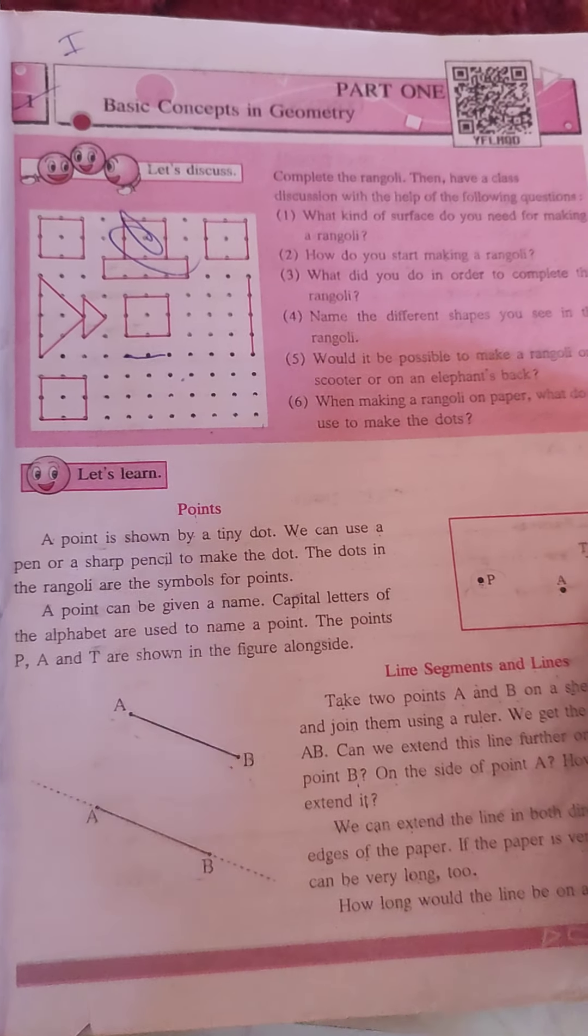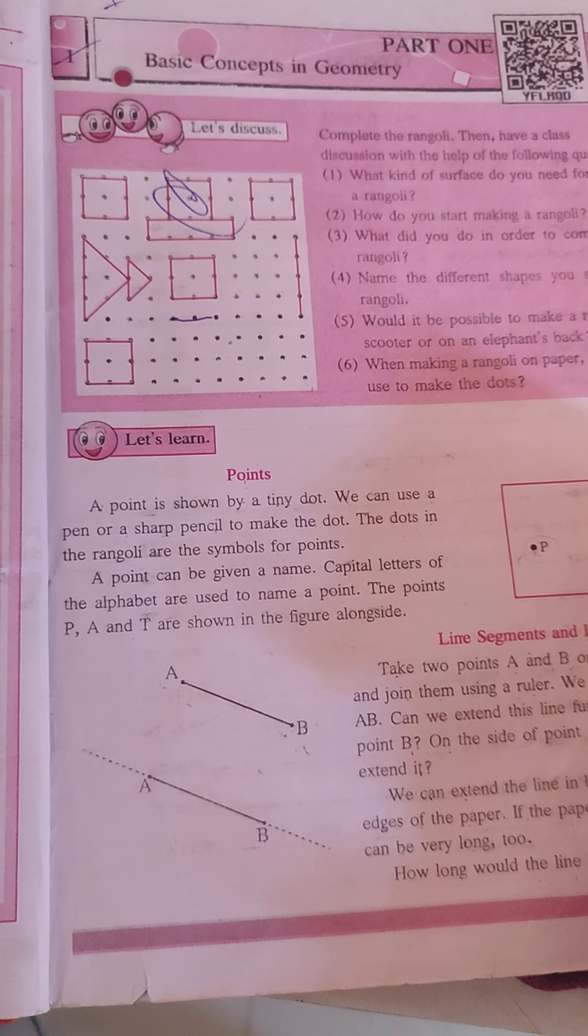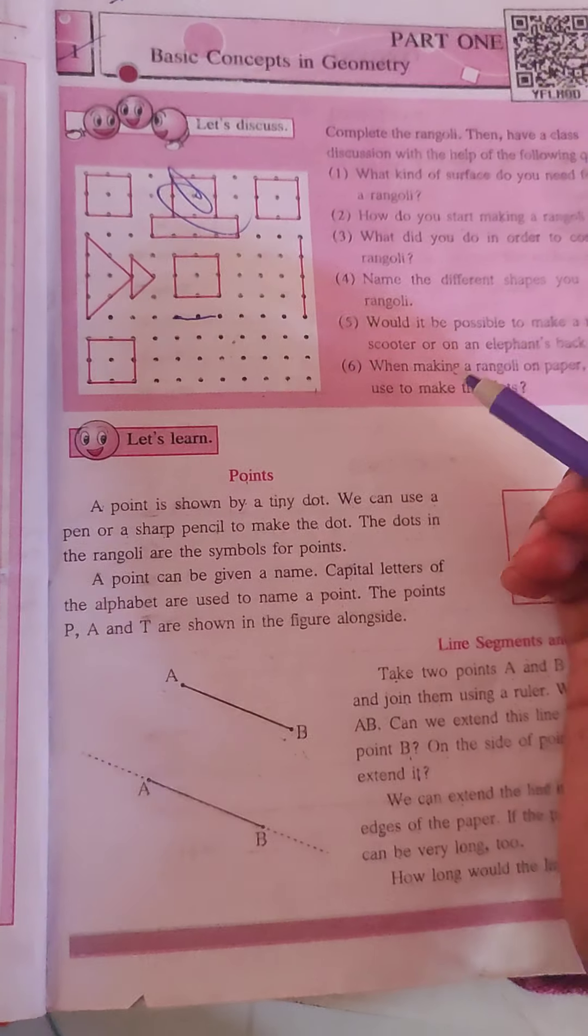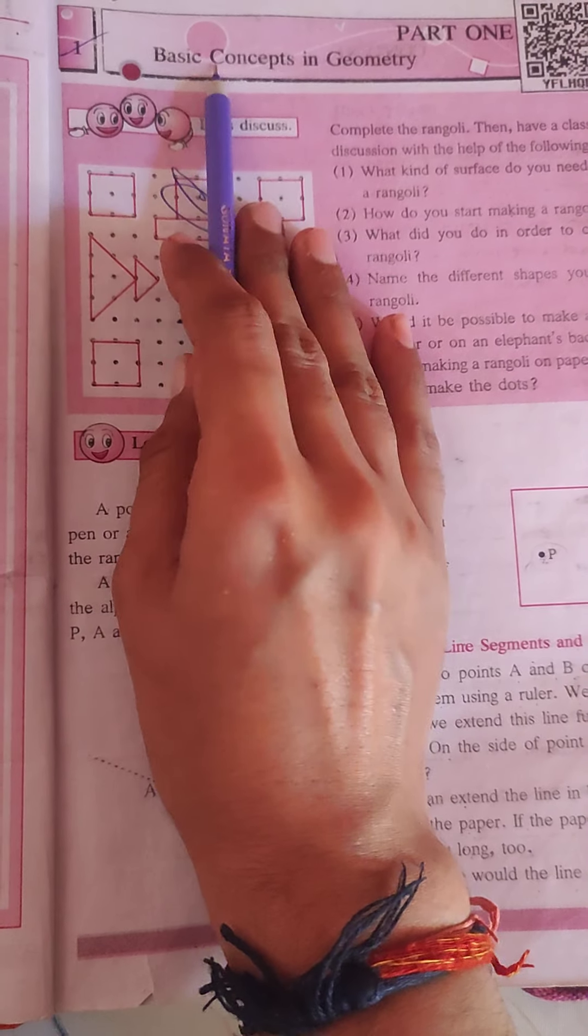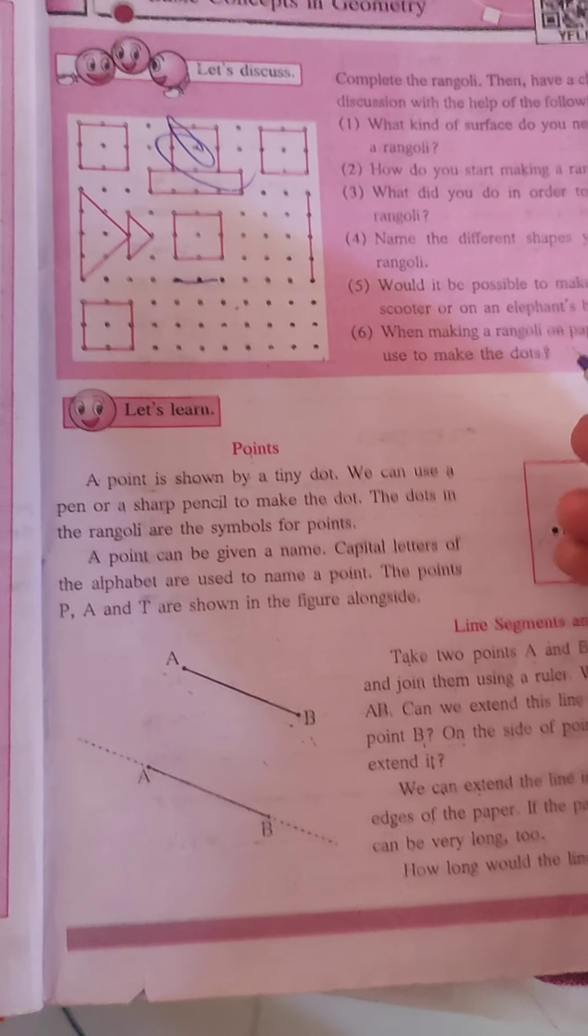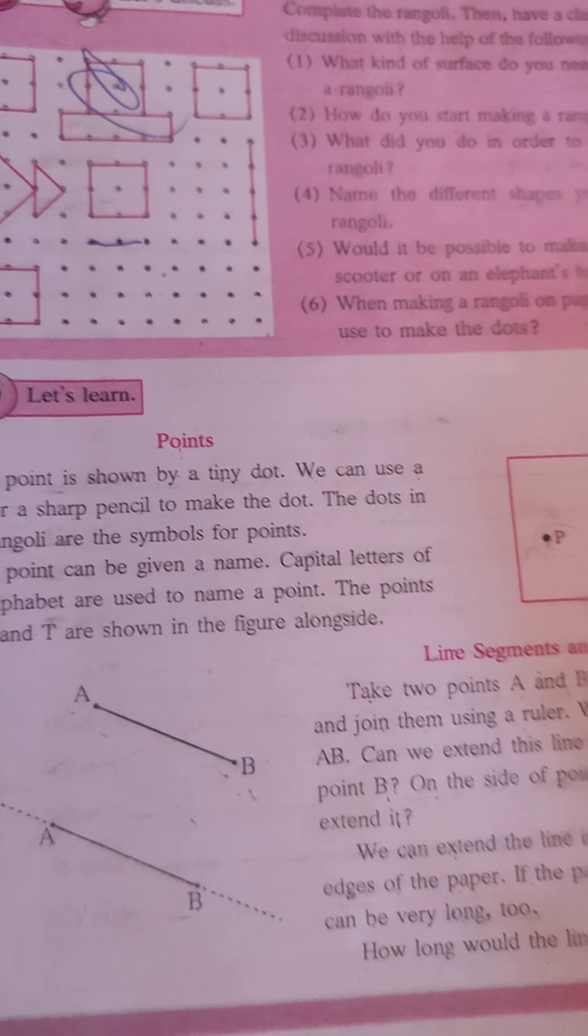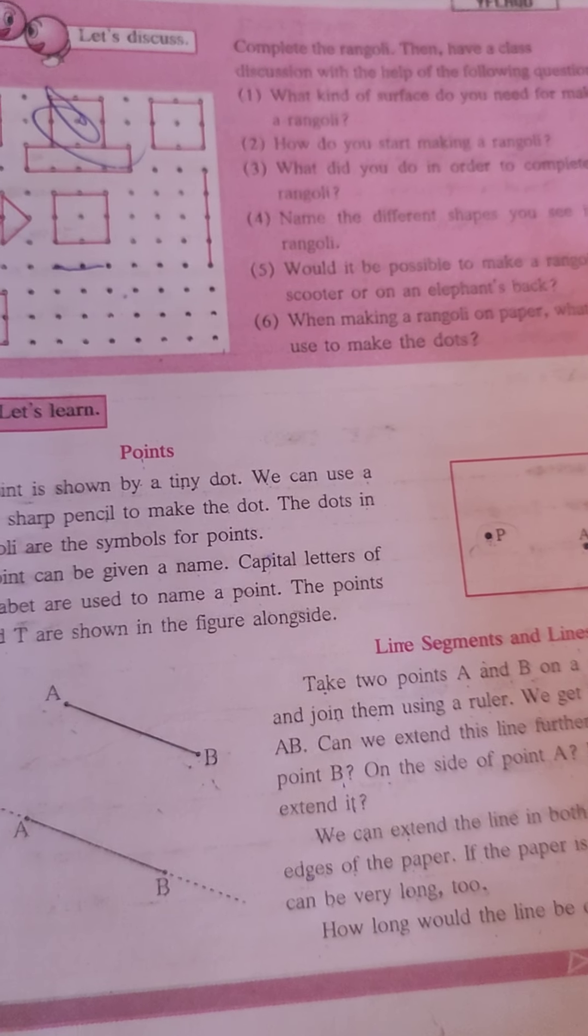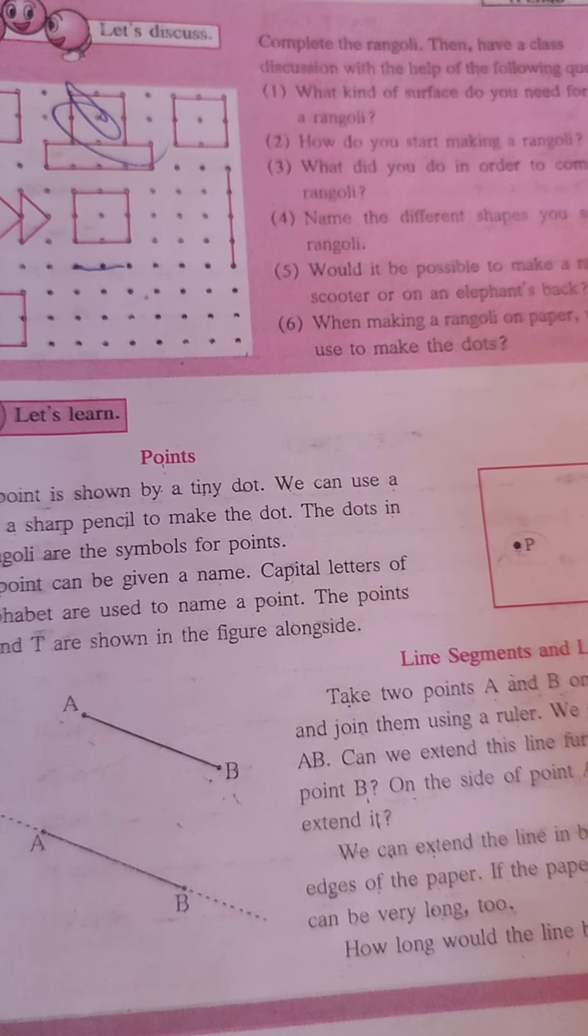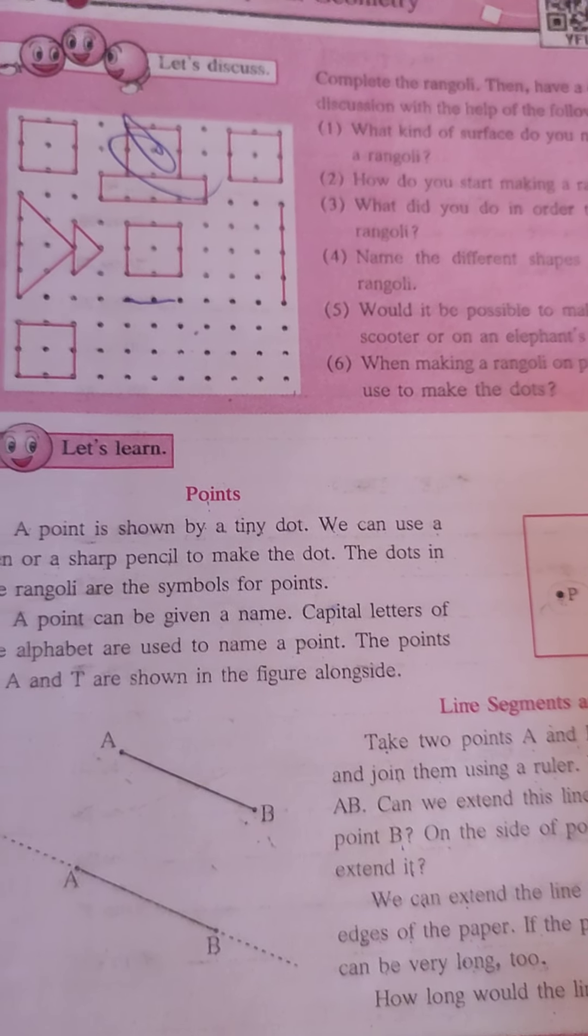Hello students, welcome to my YouTube channel. Today we learn sixth standard book, chapter number first: Basic Concepts in Geometry. In this chapter we learn about basic concepts: point and line segment, parallel lines, and what is a concurrent line.